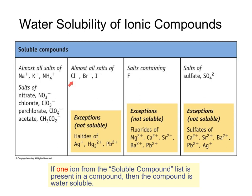Likewise, nearly all salts of chloride, bromide, and iodide are also soluble. However, we do see exceptions in the case of these halogens. Silver, mercury, and lead halides are not soluble. So something like NaCl will be soluble. However, PbCl2 will not — that is in our list of exceptions.